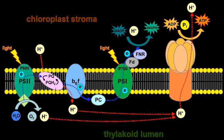In bacteria, the special pair is called P760, P840, P870, or P960. Here, P means pigment, and the number following it is the wavelength of light absorbed. If an electron of the special pair in the reaction center becomes excited, it cannot transfer this energy to another pigment using resonance energy transfer.